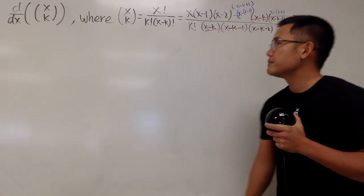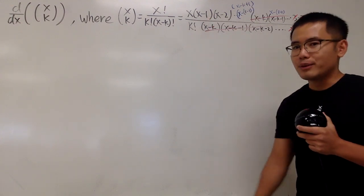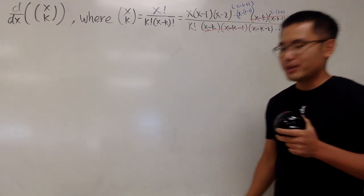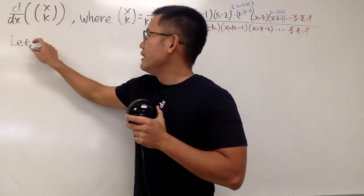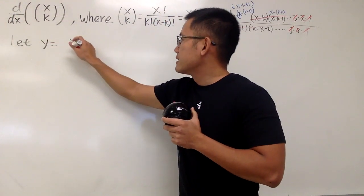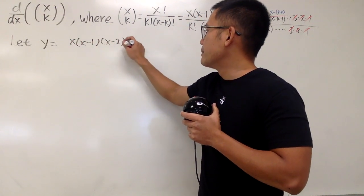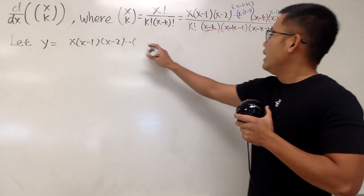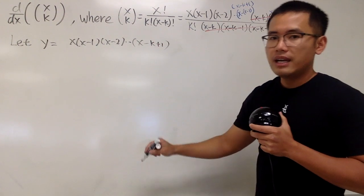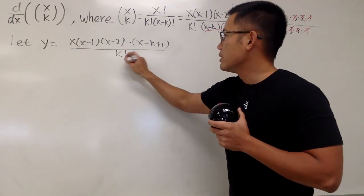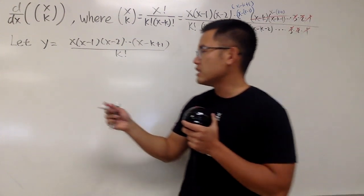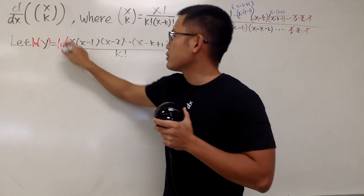Now, here is the deal. I'm not going to use the product rule like so many times. We are not going to do that. This is how we can do it. Start by putting down that y equals this expression. So x times x minus 1 times x minus 2, up to x minus k plus 1, over k factorial. To avoid the product rule, we can just take the natural log on both sides.